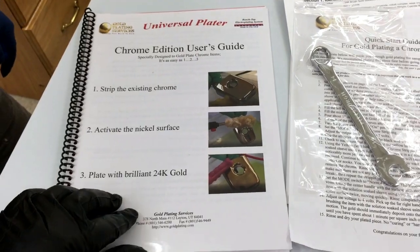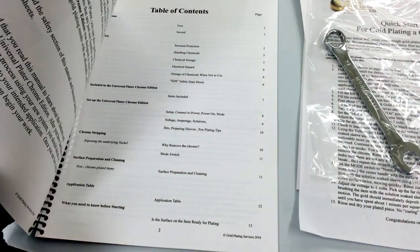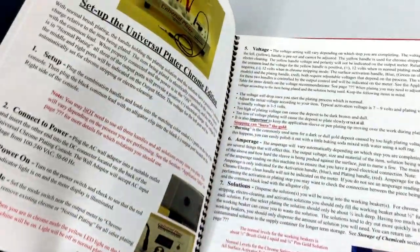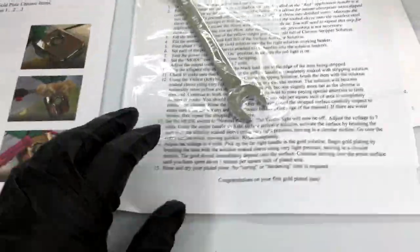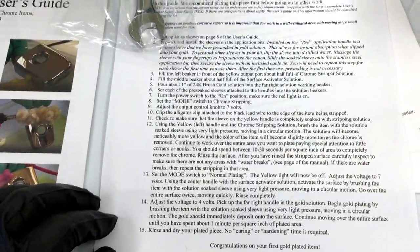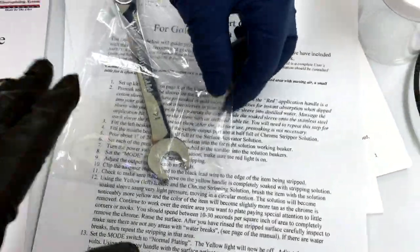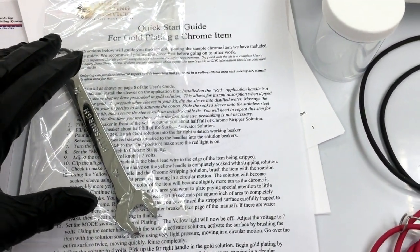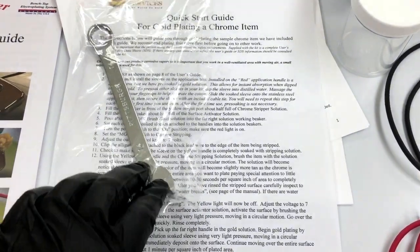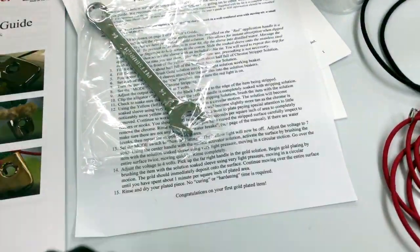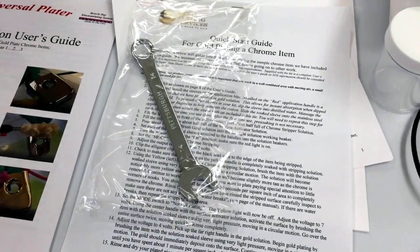We've got the Universal Plater Chrome Edition user guide. It's very comprehensive, covers everything—how to set the kit up, instructions from A to Z. It's a great guide. Then here we have the quick start guide. This is a one page paper that walks you through after you've set the kit up. It walks you through A to Z of plating this beautiful wrench so you'll have a gold wrench as your first practice piece.